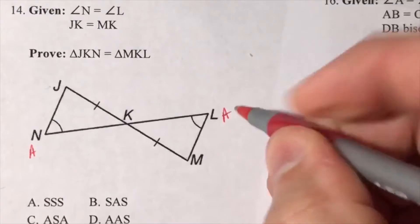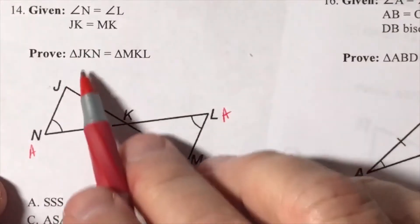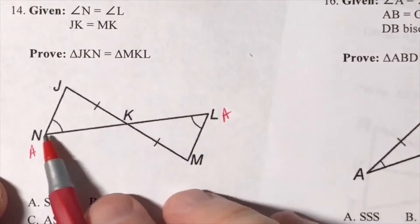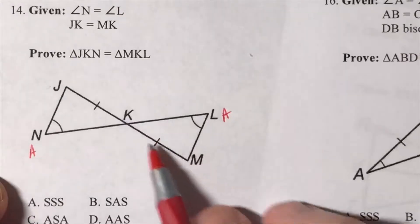And an angle here. So these two triangles, JKN and MKL, we're having to prove are congruent.